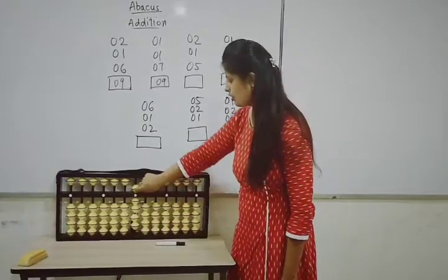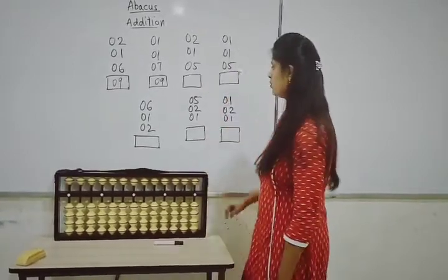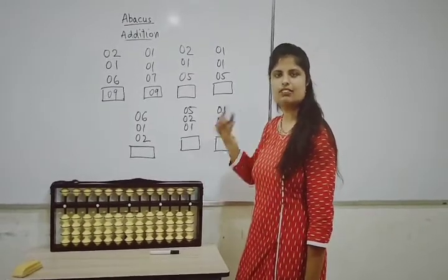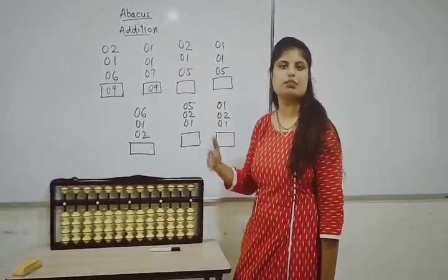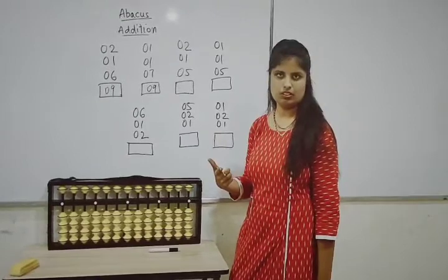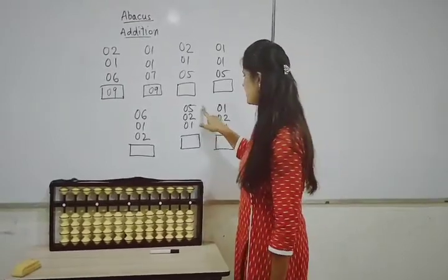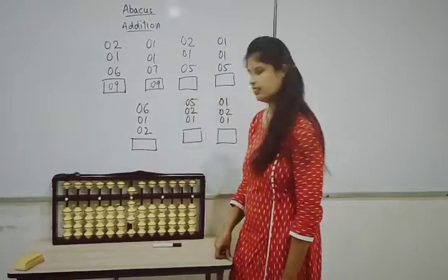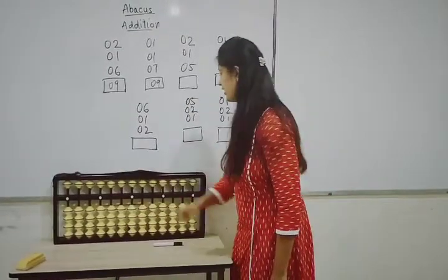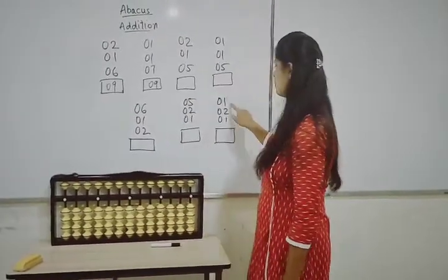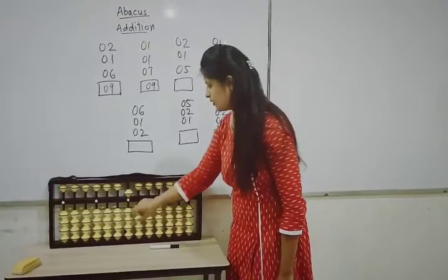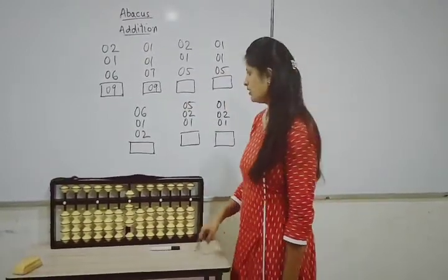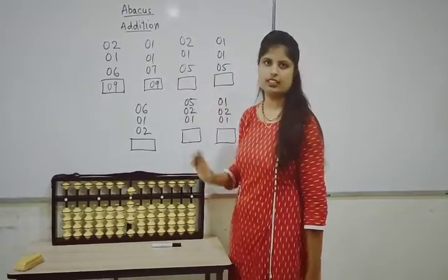This is how you have to do the addition sum quickly and fast. Now next: 5 plus 2 plus 1 equals 8. Again clear the apparatus: 1 plus 2 plus 1, again equals 4. So this is how we have to do the addition.